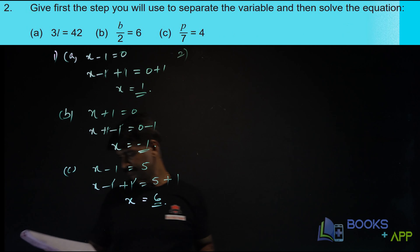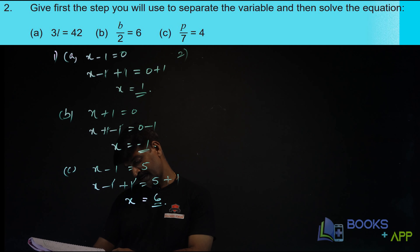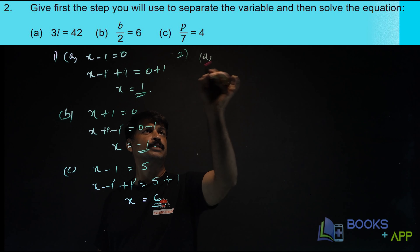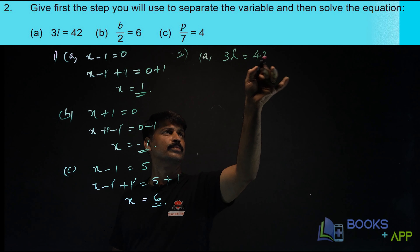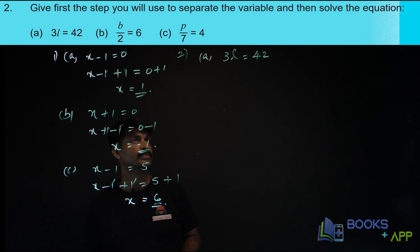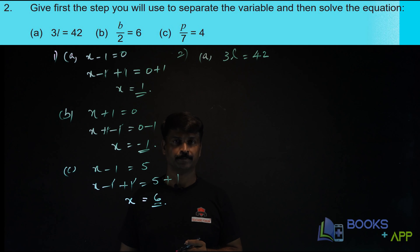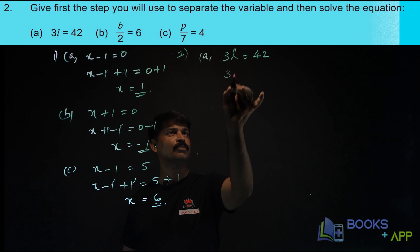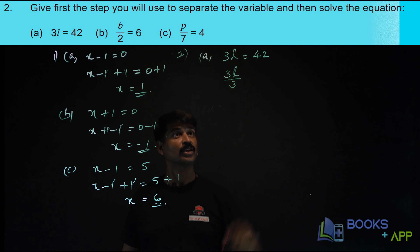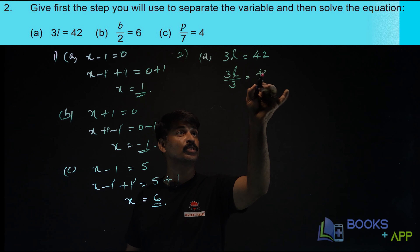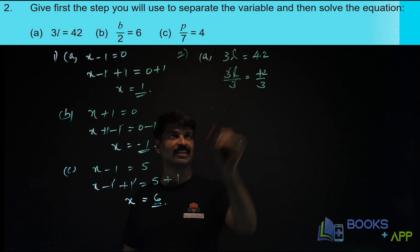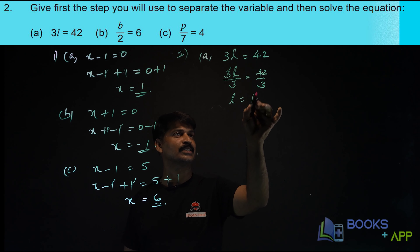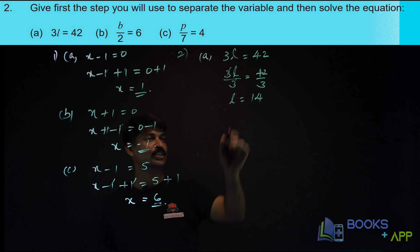Now let us solve the second question: give the first step you will use to separate the variable and then solve the equation. First one — 3L is equal to 42. What do you have to do? You have to find the value of L. So we have to remove 3 from here. We have to divide LHS by 3, and RHS also by 3. So 3 and 3 get cancelled. L is equal to 42 by 3, that is 14. So L is equal to 14.